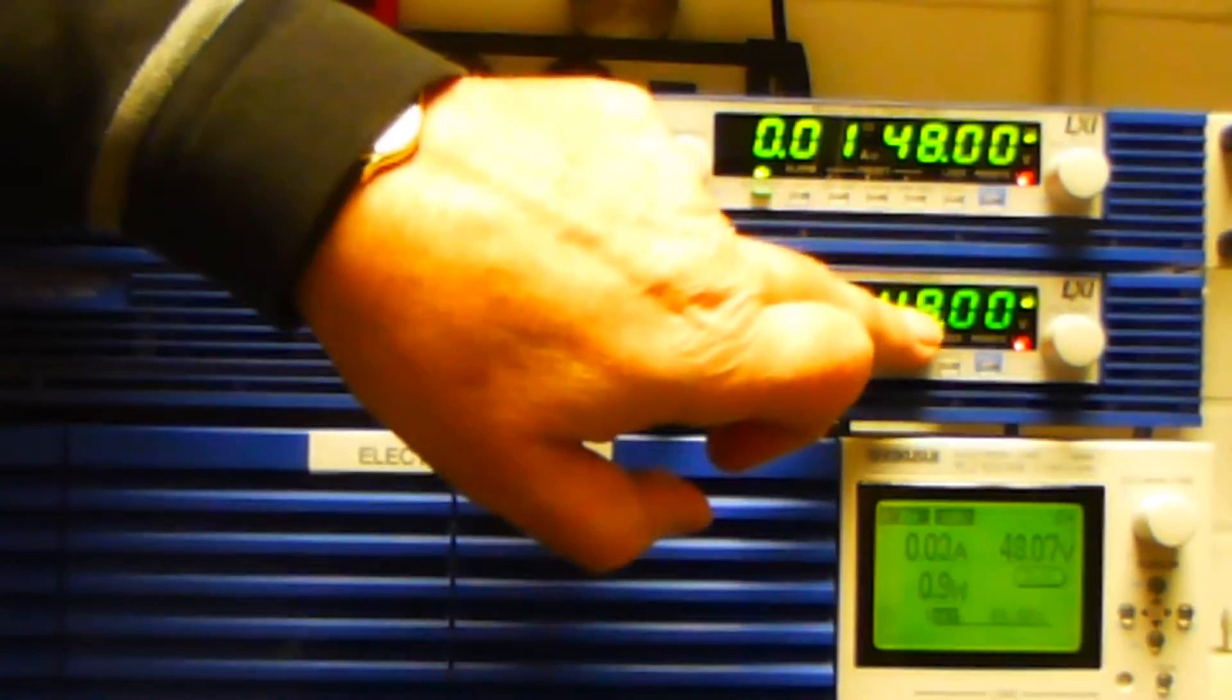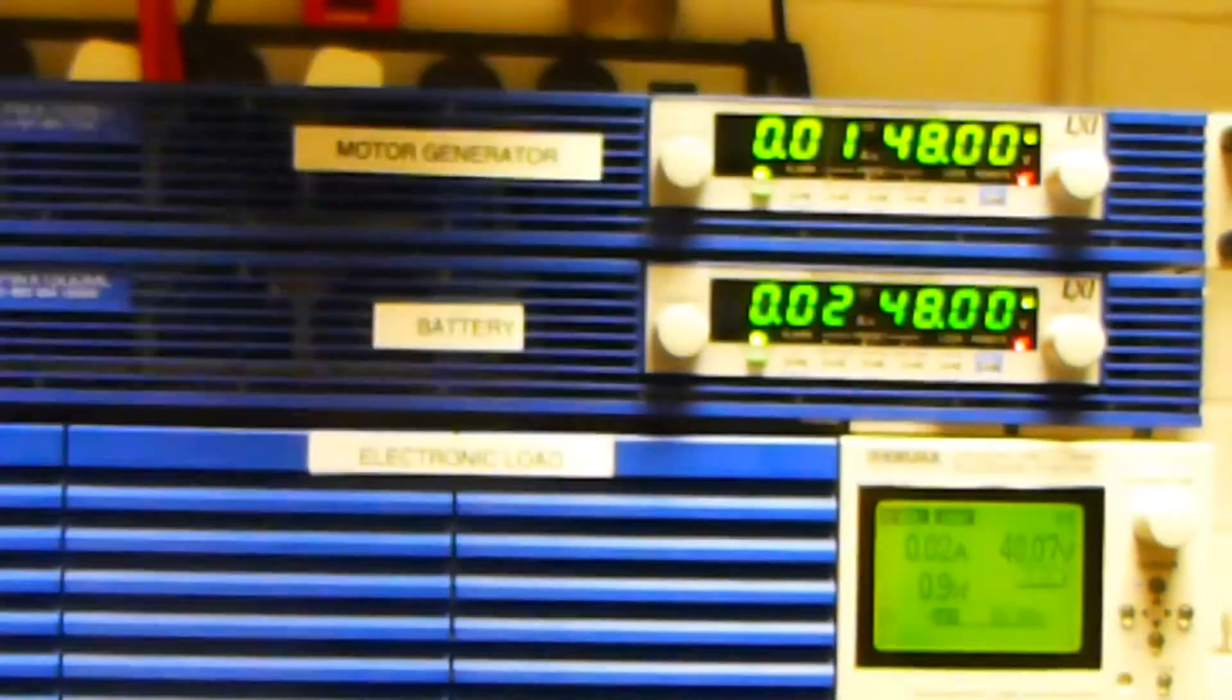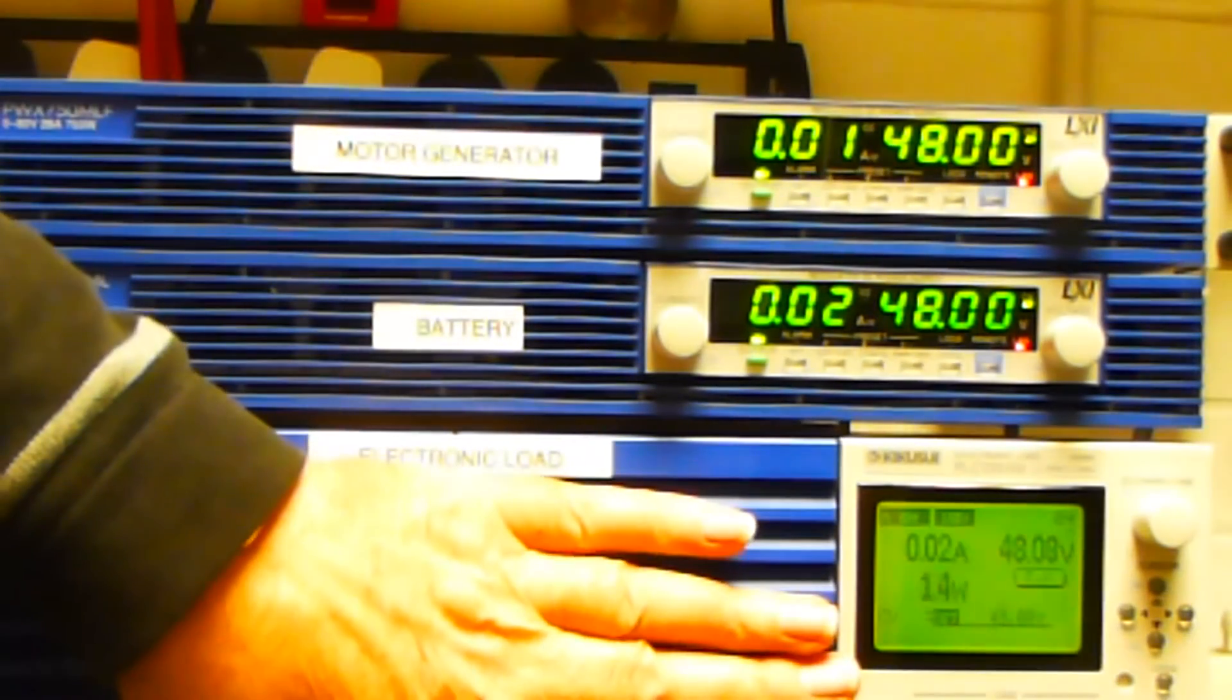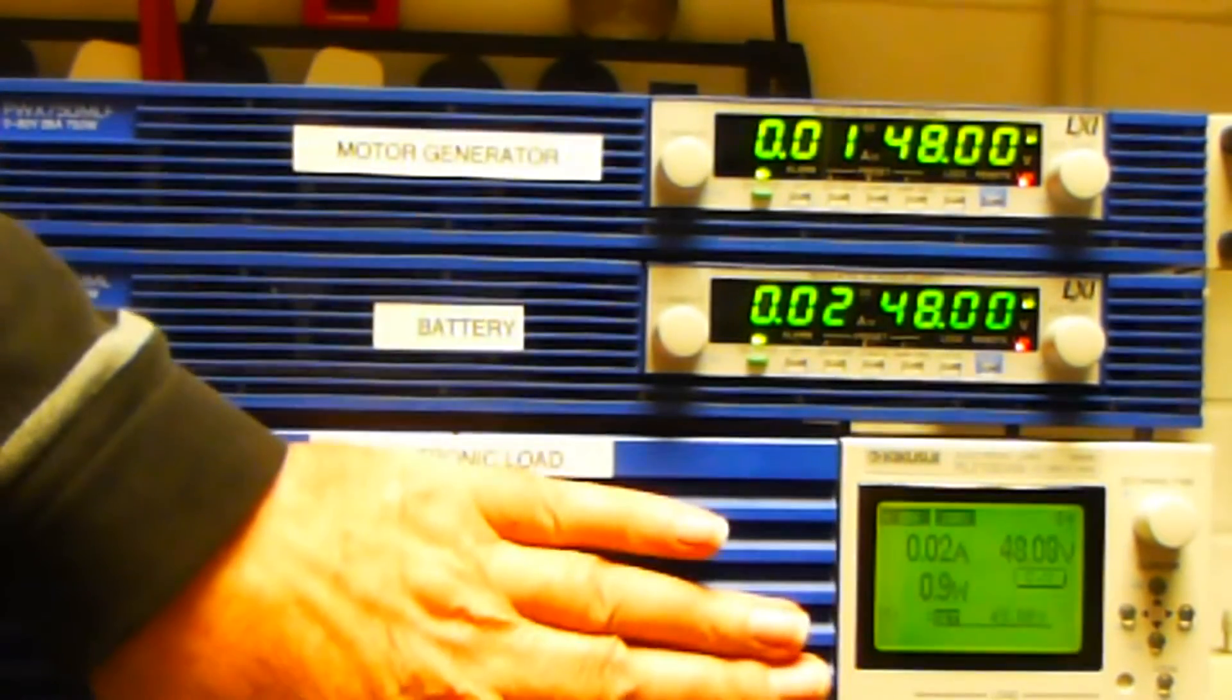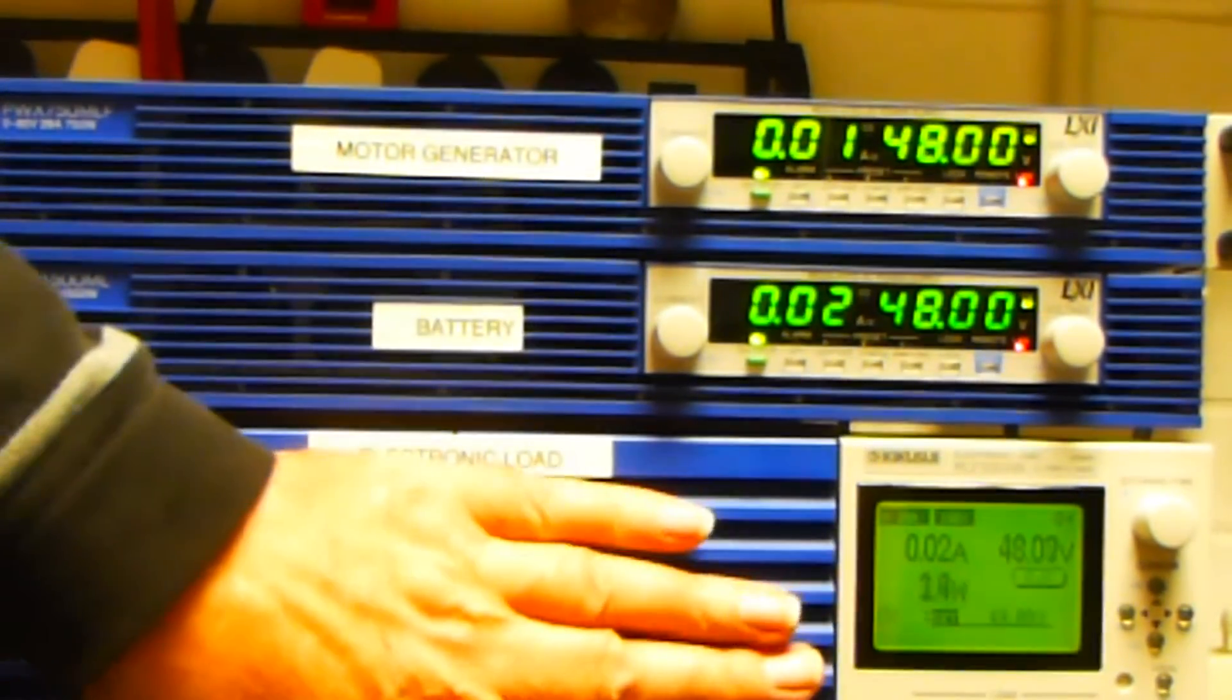And the battery is producing 48 volts, which is driving the motor at 48 volts. This unit here shows that when power is reversed back into the battery from the motor, this electronic load represents that transfer of energy.